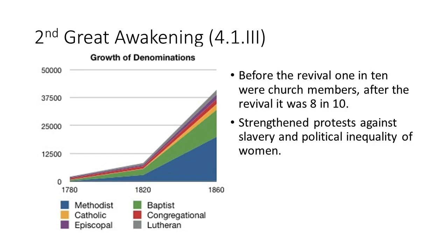Before this revival, one in ten people were church members who actively went to church. After this revival, eight in ten went to church. A lot of these new church members are women. Black people and Native Americans were also accepted into these denominations — it was more democratic. One of the effects of the Second Great Awakening is increased protest against slavery — the abolitionist movement picks up — along with attention to the inequalities that women are facing.